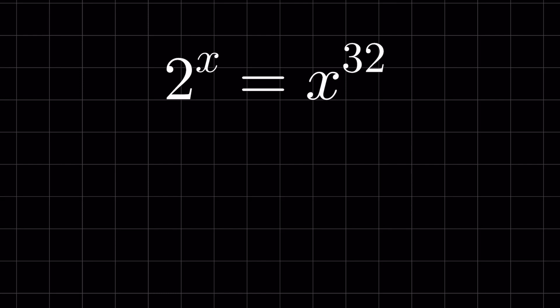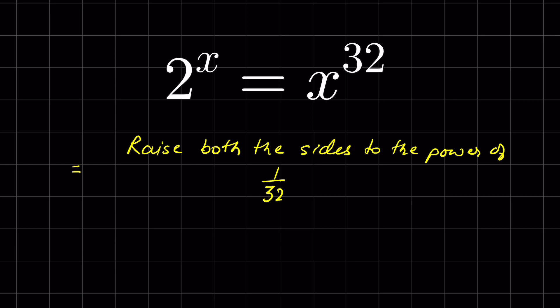2 raised to the power x is equal to x raised to the power 32. Find the value of x. Now let's raise both sides to the power of 1 upon 32x. We do this so that on the left-hand side we can remove the x in the exponent, and on the right-hand side we can remove 32 from the exponent, so that the variable has a variable as its exponent and the number has a number as its exponent.